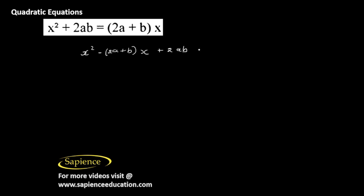So it will become minus 2a plus b into x plus 2ab is still there in the left-hand side, 2ab equal to 0.